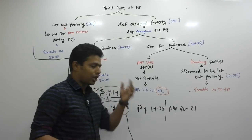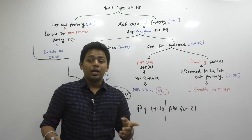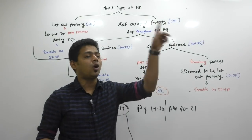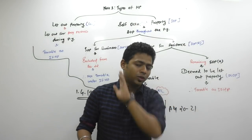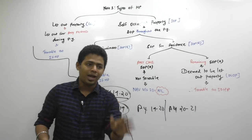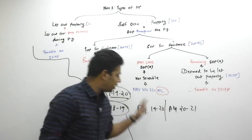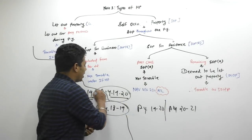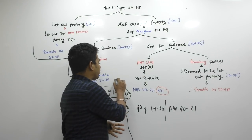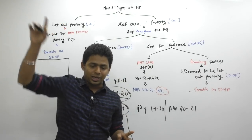Some students were asking — is there any amendment in house property in Budget 19 applicable for June 19 or December 19? The answer is no. Any exam in 2019 will be based on AY-19-20, and AY-19-20 means Finance Act 18 — last year's budget. Current year budget is not applicable.